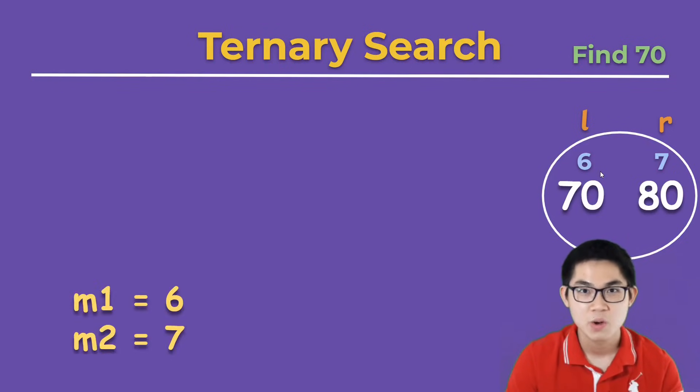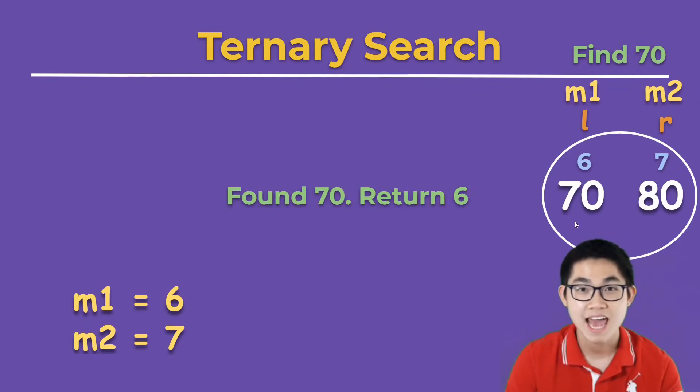We calculate m1 and m2. And they are at 6 and 7. And there you go. We found 70 at m1 in the array. And we can return true or return 6.